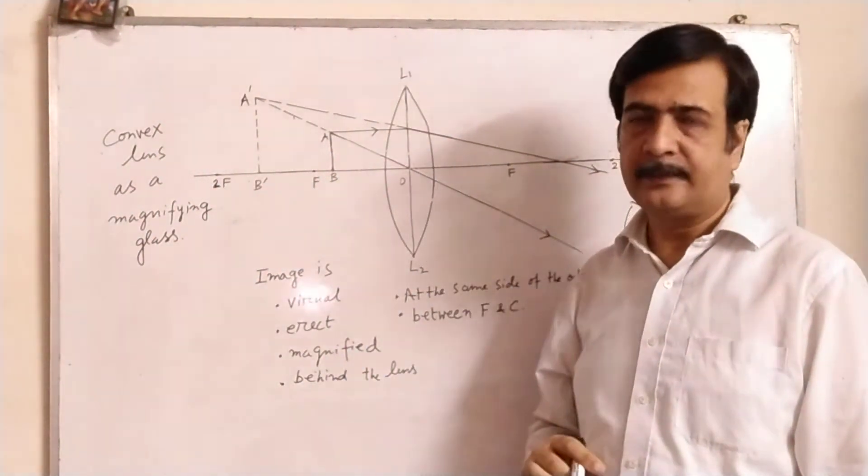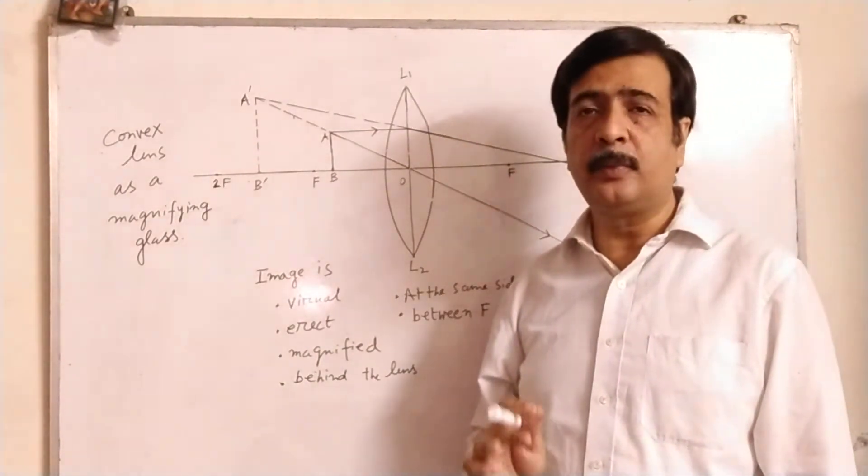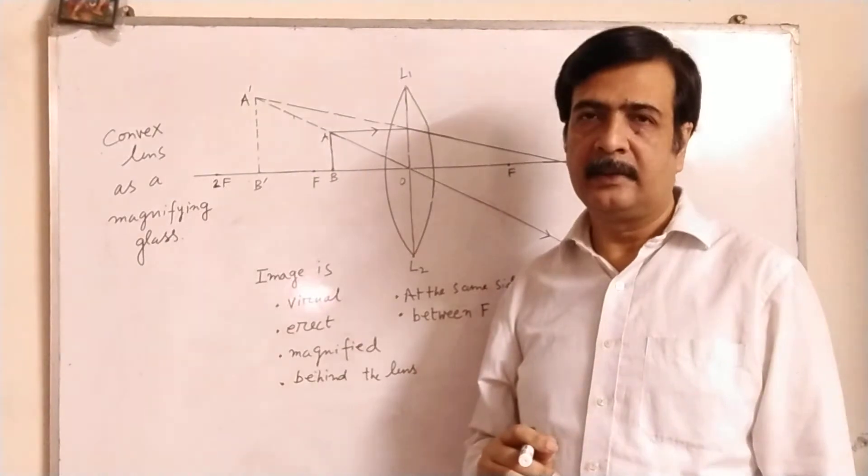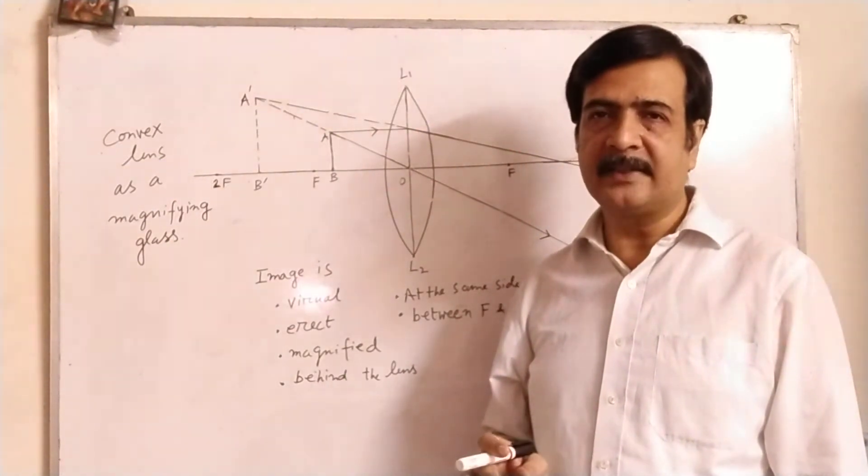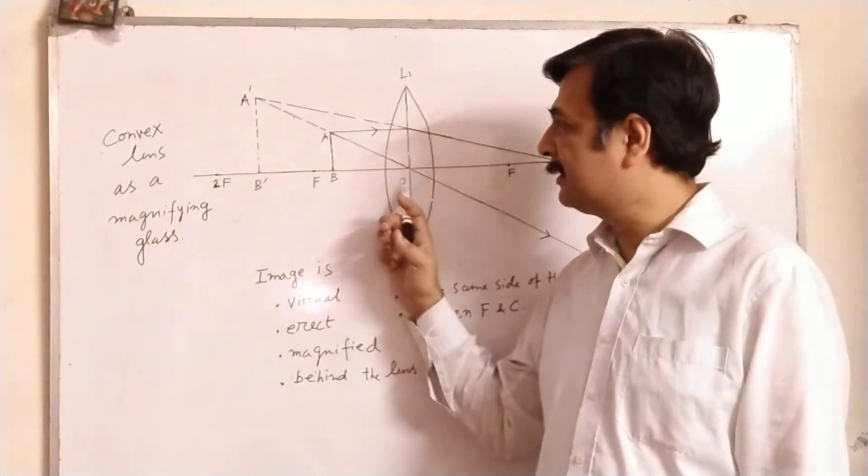A B is the object. Now the object here should be placed within the focal length. That is, the object should be placed within the focus and the optical center, between focus F and optical center.